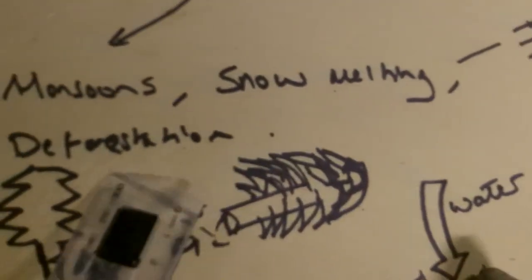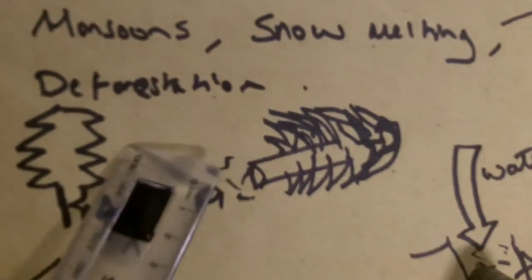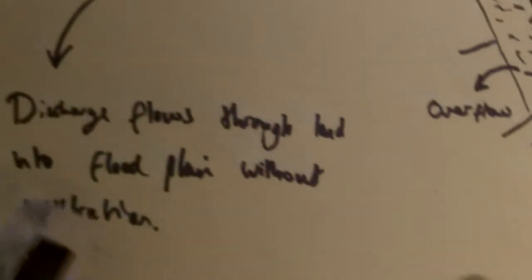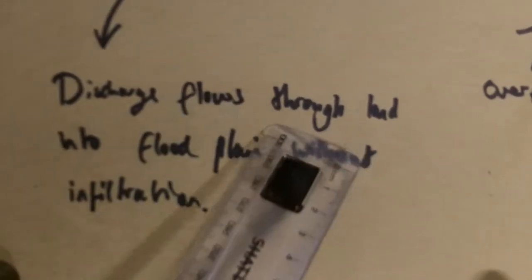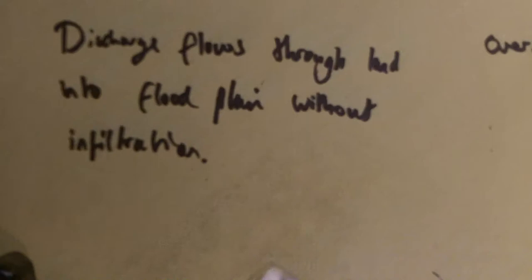What actually caused this land to flood? Monsoons, snow melting, and deforestation are all factors that contribute to this flooding. Deforestation in the Himalayas meant that there was no filtration in the land, so the discharge of the rainwater from the monsoons flowed down into this delta, into this very flat land, causing the country of Bangladesh to flood.